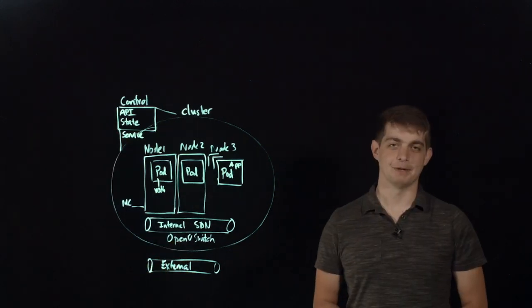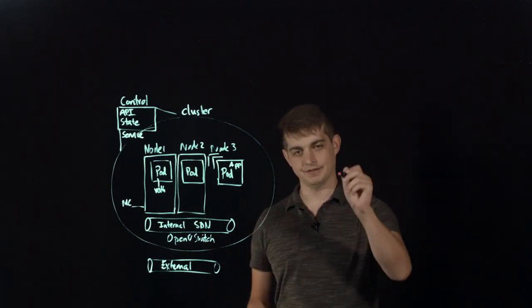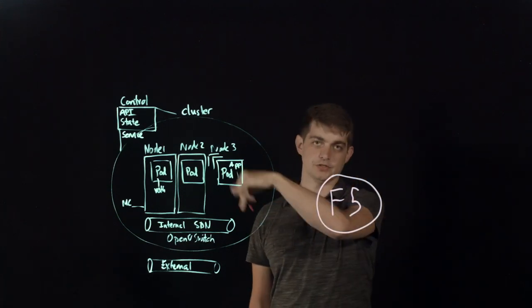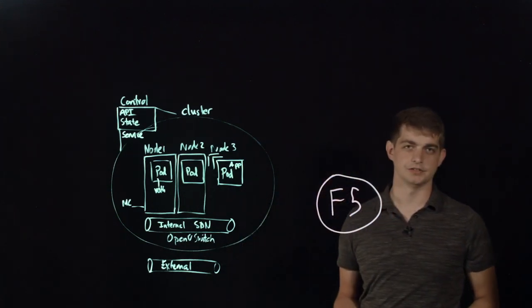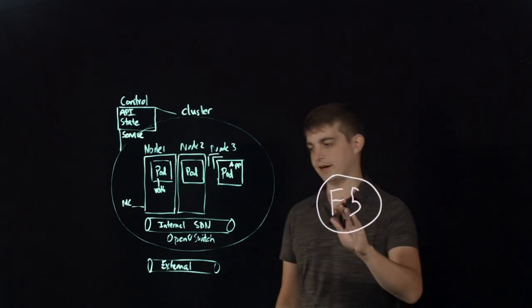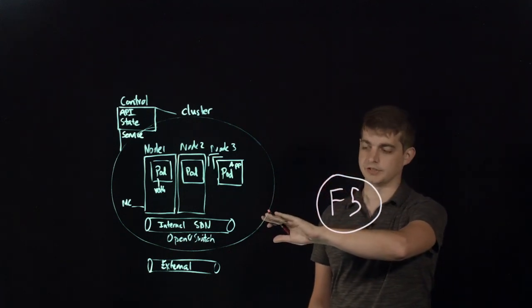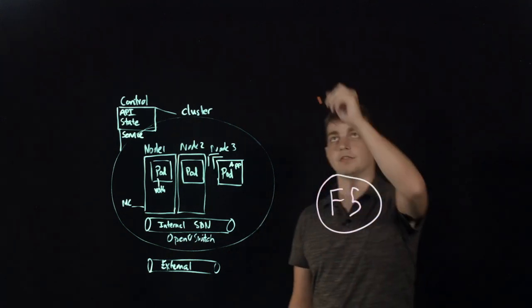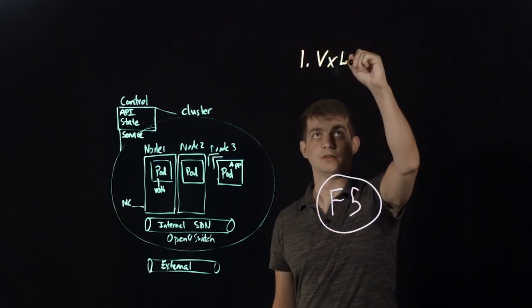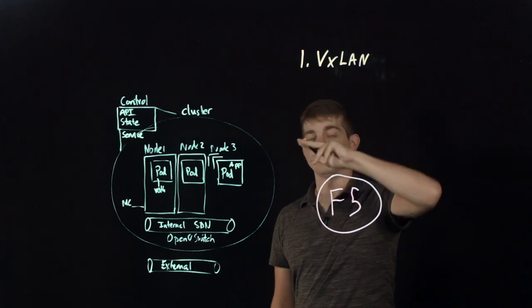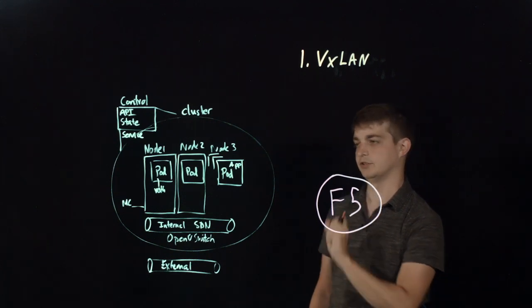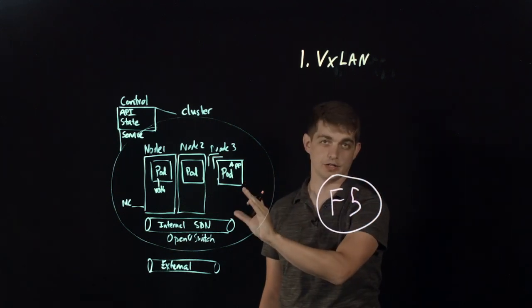The next thing that we're going to talk about is how you integrate your F5 device, so we'll draw an F5 right here, with your OpenShift cluster using something called Container Ingress Services, or CIS for short. Now, when you talk about connecting your F5 device with your OpenShift cluster, there's really three different components to it. The first one is something that we talked about a little bit earlier, which is our VXLAN tunnel. And what that's going to do is basically give us connectivity between our F5 device, so it can directly connect to the pods within our OpenShift cluster.